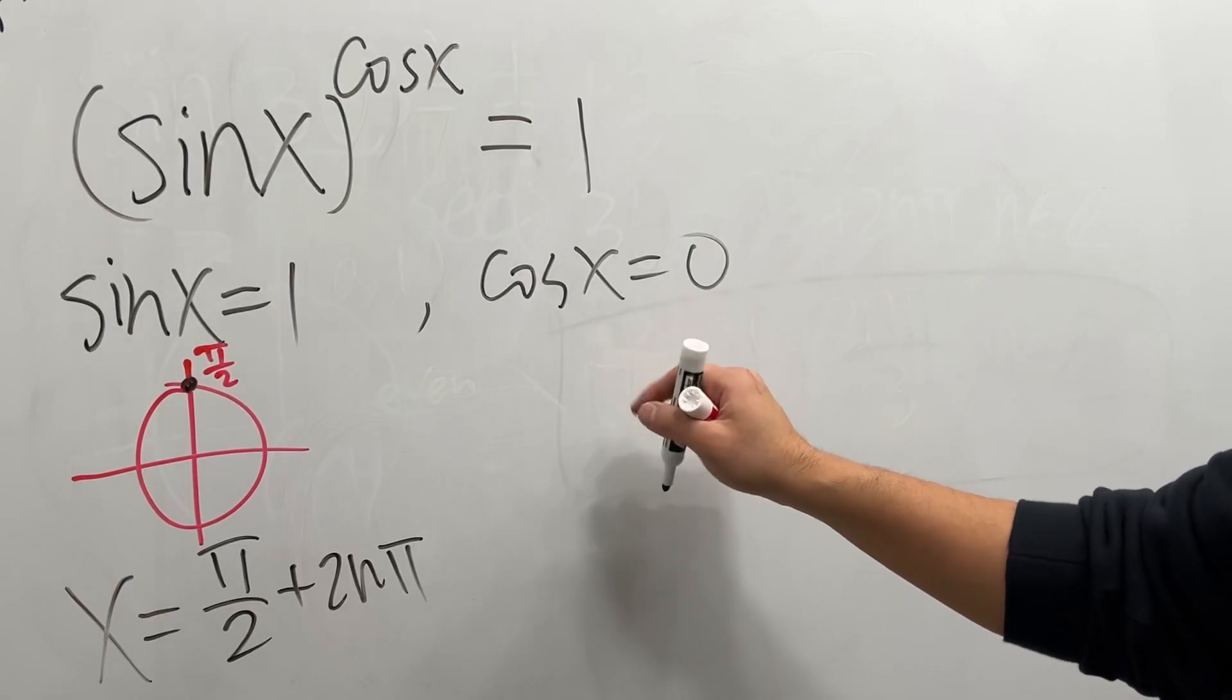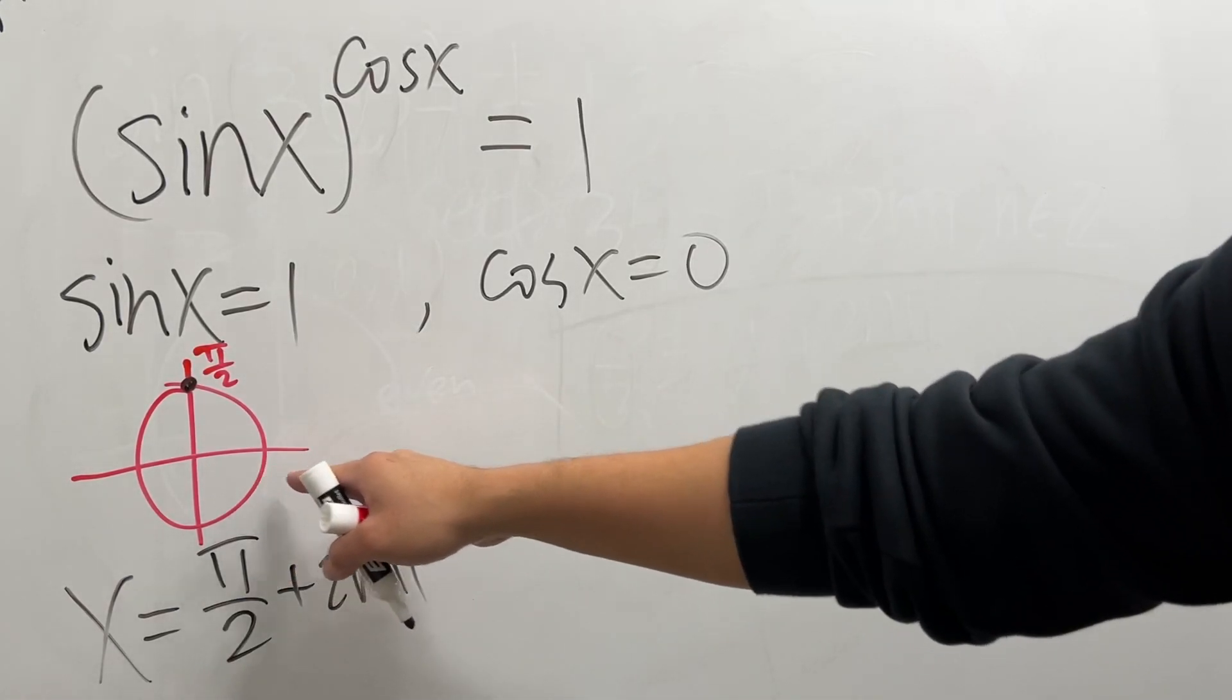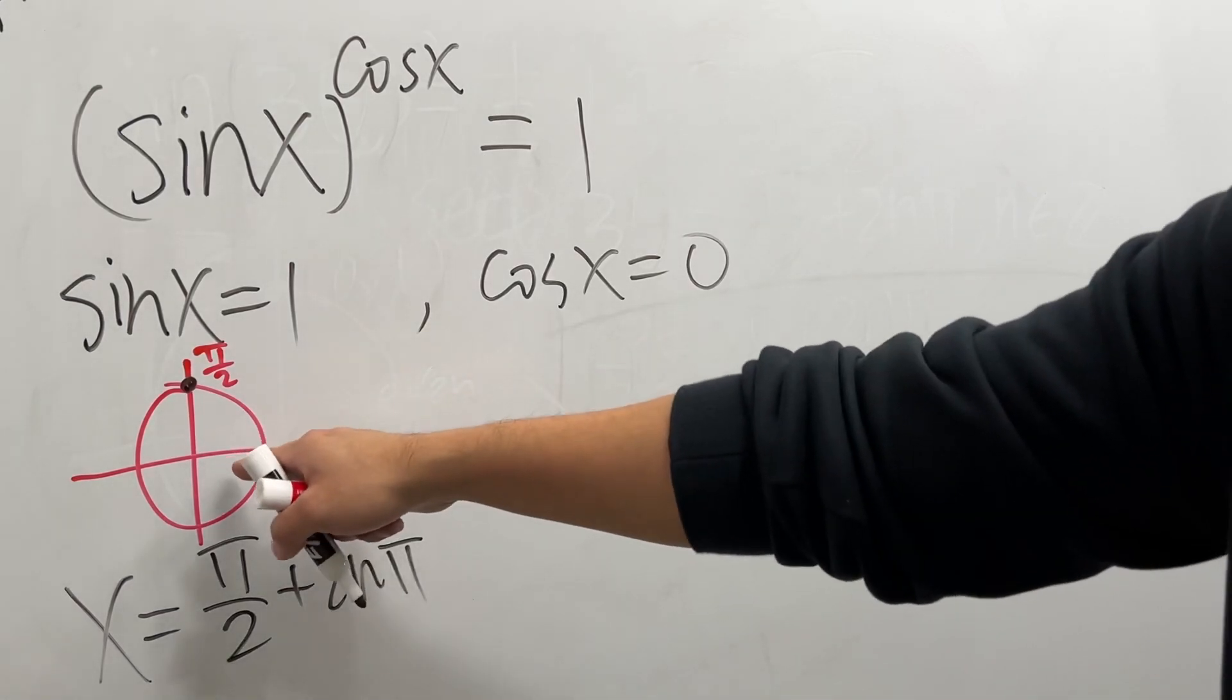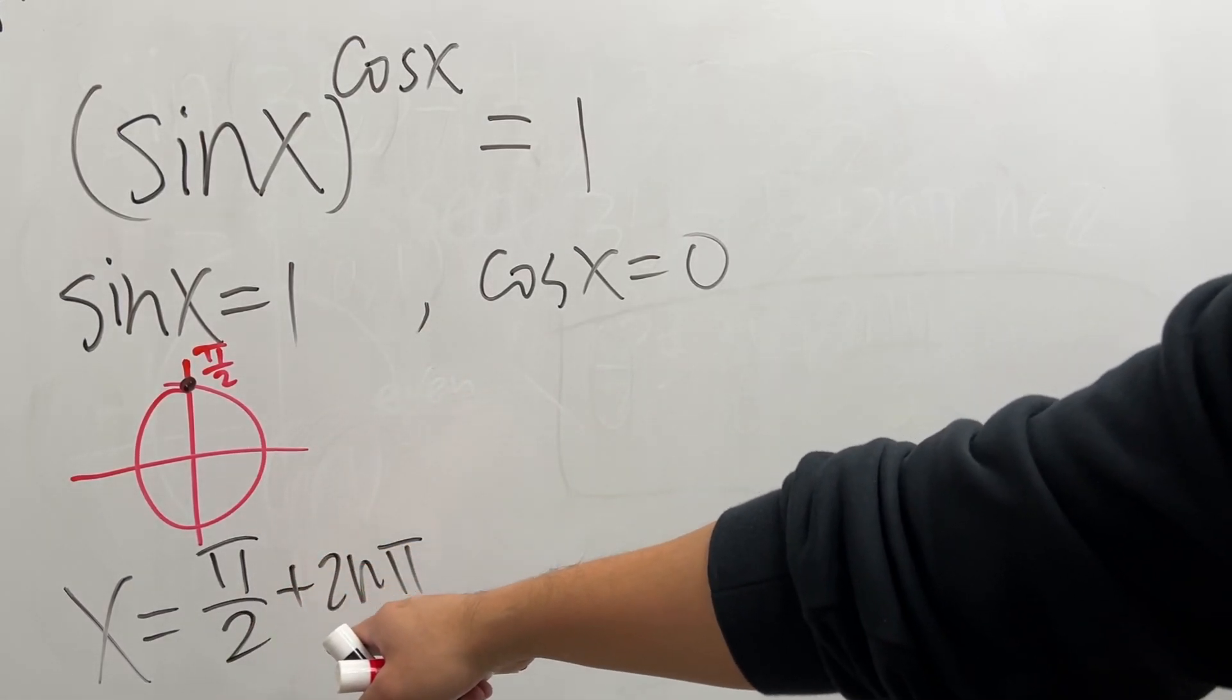Now cos x equals 0. It's in fact the same as that. That's also cos x is equal to 0, I just realized that.